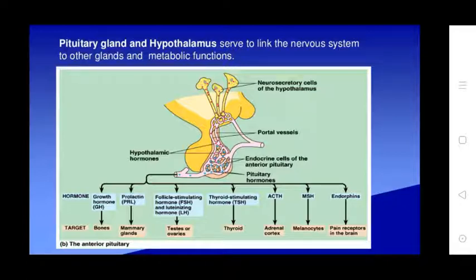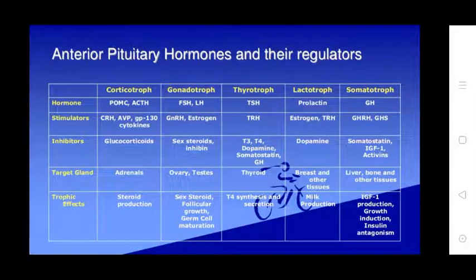The anterior pituitary hormones include growth hormone, prolactin, FSH, LH, TSH, ACTH, and MSH, which act on the adrenal cortex, melanocytes, and other endocrine glands. These include corticotrophs, gonadotrophs, thyrotrophs, lactotrophs, and somatotrophs, each secreting distinct hormones with stimulating and inhibiting factors acting on target glands.